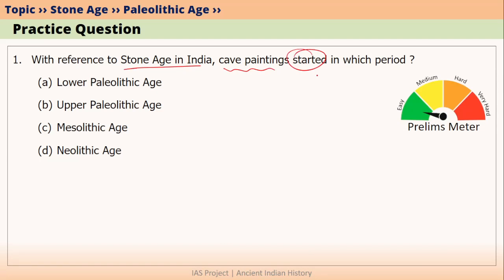Four options have been given: Lower Paleolithic Age, Upper Paleolithic Age, Mesolithic Age, or Neolithic Age. If you know the answer to this question, please comment below this video. This is a very easy question. You will learn about the answer in this video anyway.